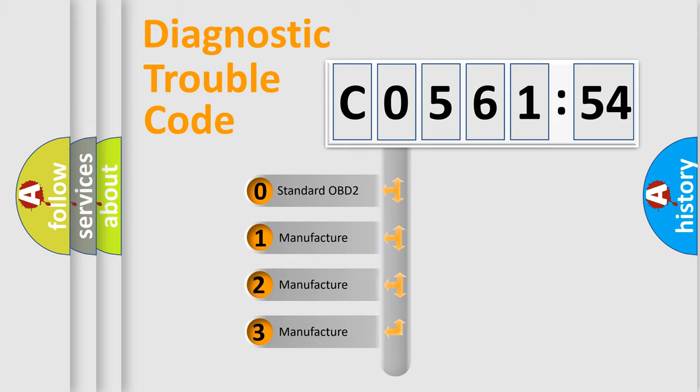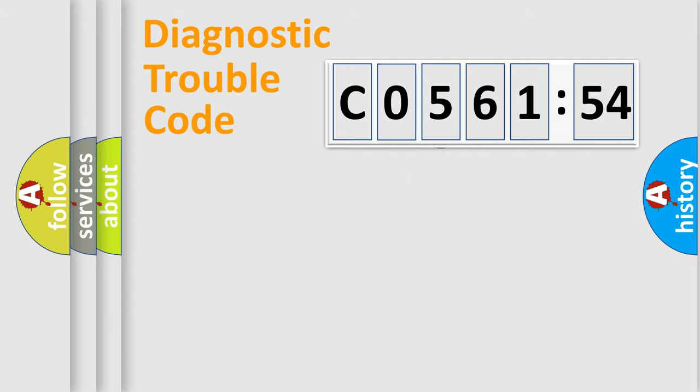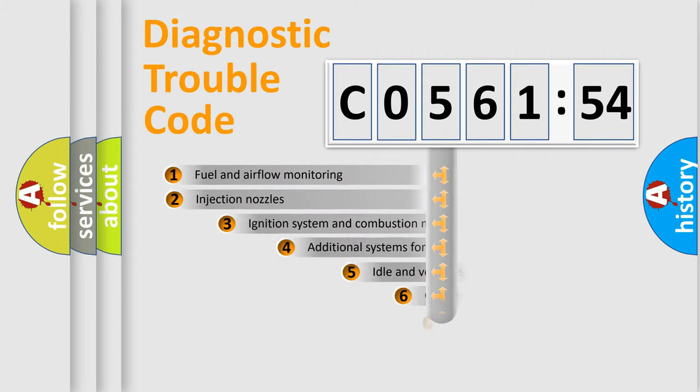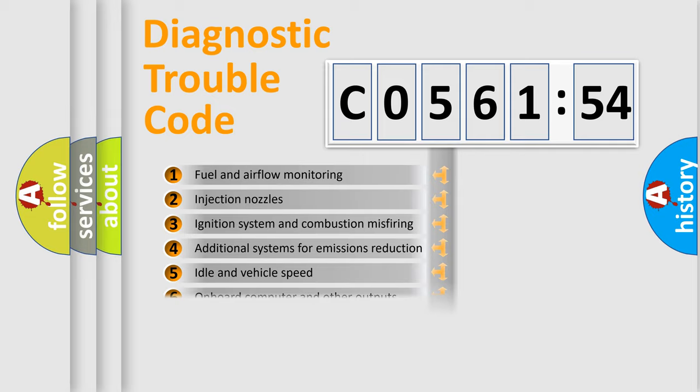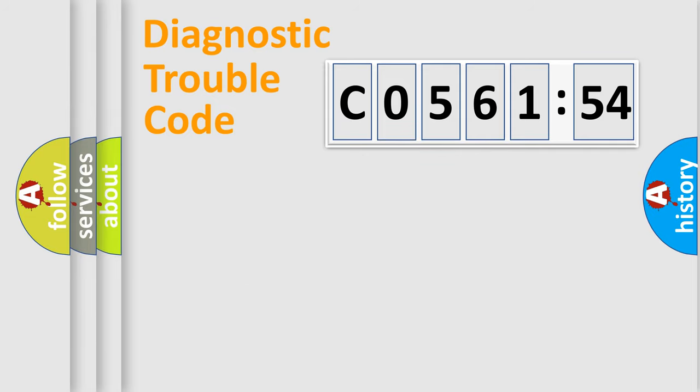If the second character is expressed as zero, it is a standardized error. In the case of numbers 1, 2, or 3, it is a more specific expression of the car-specific error. The third character specifies a subset of errors. The distribution shown is valid only for the standardized DTC code.